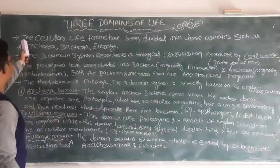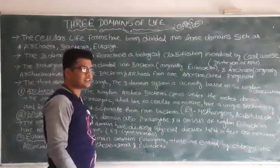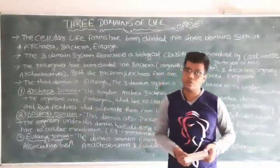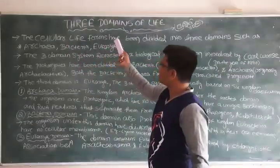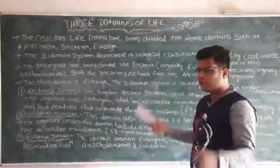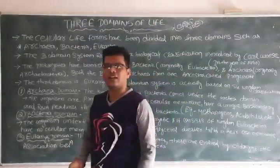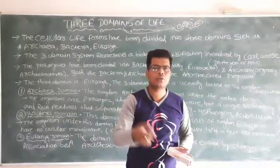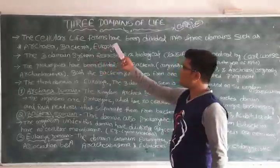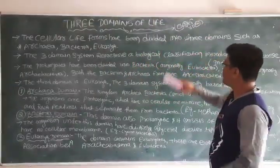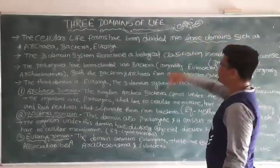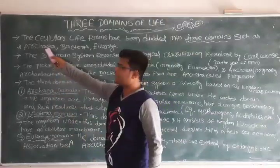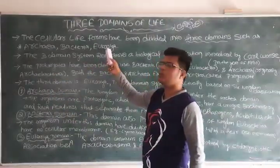So this is the three domain system. In the three domains of life, the total life is based on mainly three domains. It depends on the total lifestyle. The first point is cellular life forms. Life starts from the cell because the cell is the structural and functional unit of life.